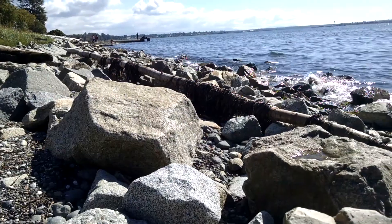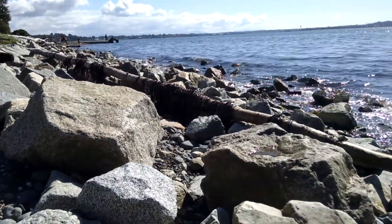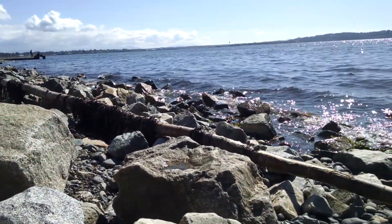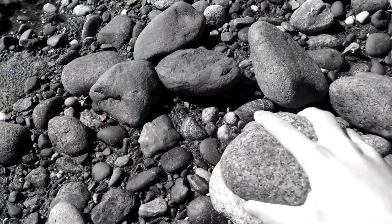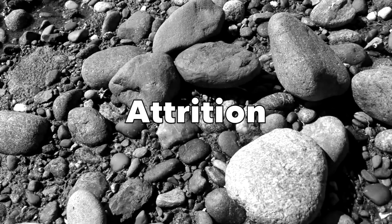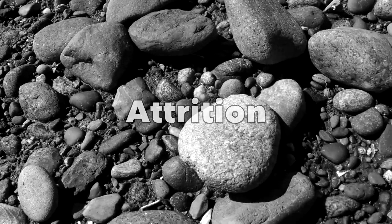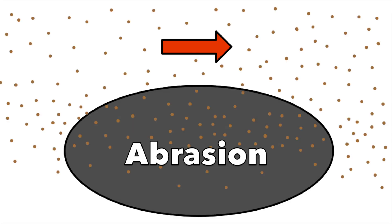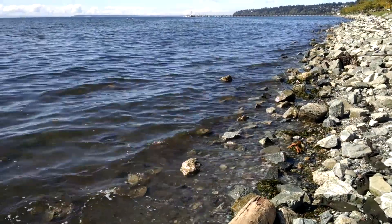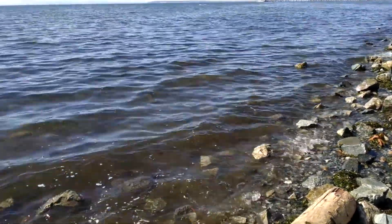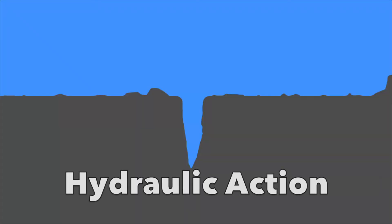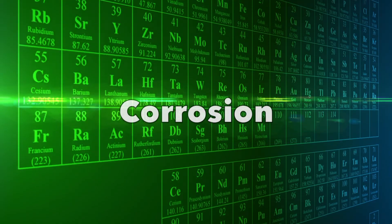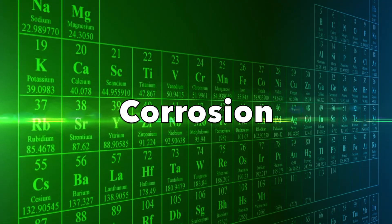But how do things erode? How do rock and other solids wear away? Firstly, there's attrition, which is when rocks strike each other. Abrasion is when they rub together. This can also happen with sediment, which is easy enough to spot here as the water is full of sand. Hydraulic action is when water is driven into cracks. Finally, there's corrosion, which is a chemical breakdown.